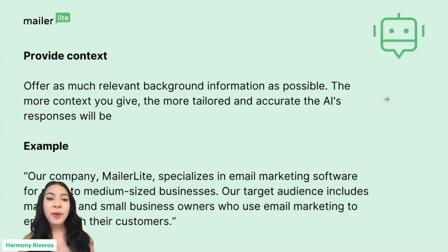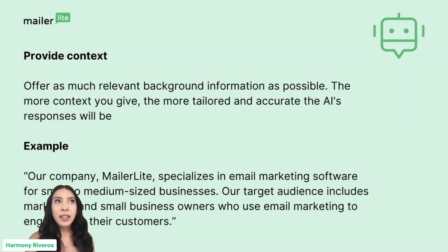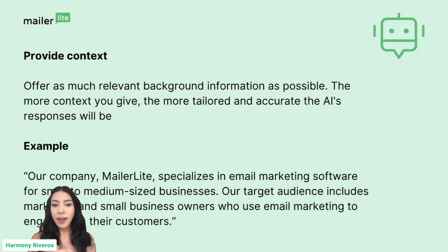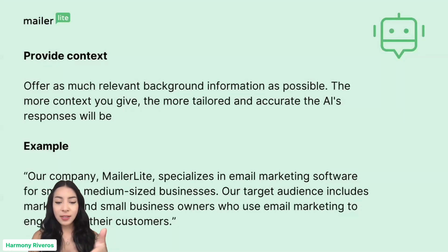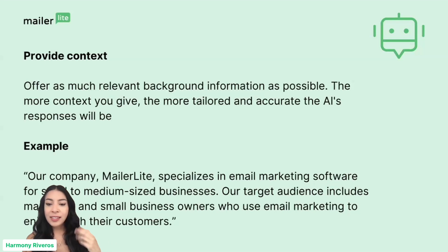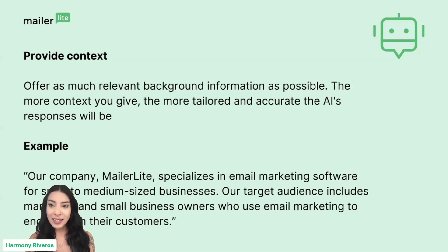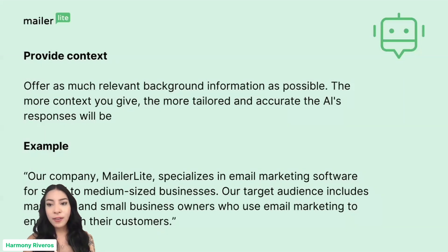Speaking of context, you want to offer as much relevant background information as possible. These learning systems can hold data and remember things, so you don't always have to give the same background information. But initially, you want to give as much context as possible. The more context you give, the more tailored and accurate the AI's responses will be. For example: 'Our company, MailerLite, specializes in email marketing software for small to medium-sized businesses. Our target audience includes marketers and small business owners who use email marketing to engage with their customers.'